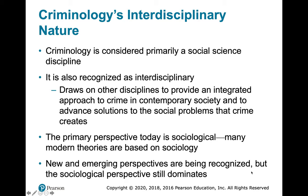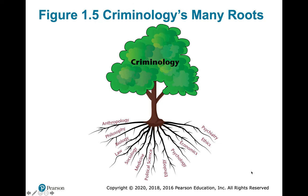Criminology is interdisciplinary and considered primarily a social science, but it draws on many other disciplines. The primary focus is sociology and sociological theories — what impact does society have that leads to criminal behavior. Many other disciplines contribute as well: philosophy, biology, psychology, ethics, economics, and political science all play a role in criminology.